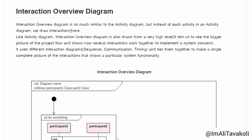Like Activity Diagram, Interaction Overview Diagram is also drawn from a very high level. It is used to see the bigger picture of the project flow and shows how several interactions work together to implement a system concern. It uses different interaction diagrams like Sequence, Communication, Timing and ties them together to make a single complete picture of the interactions that show a particular system functionality.